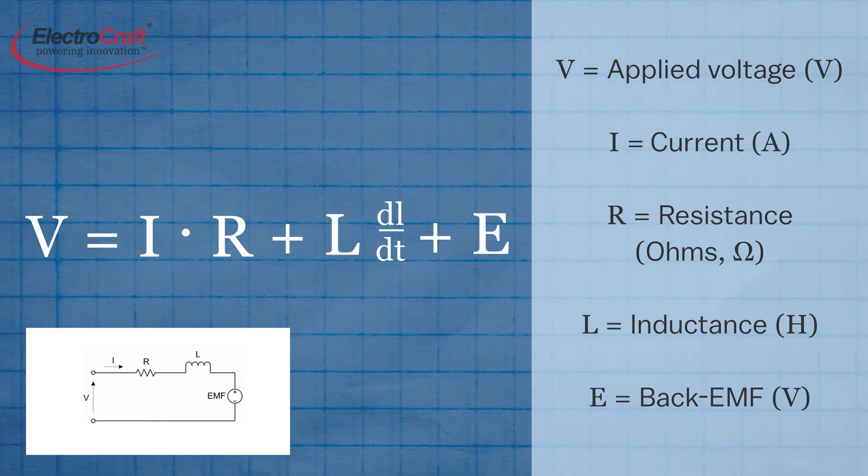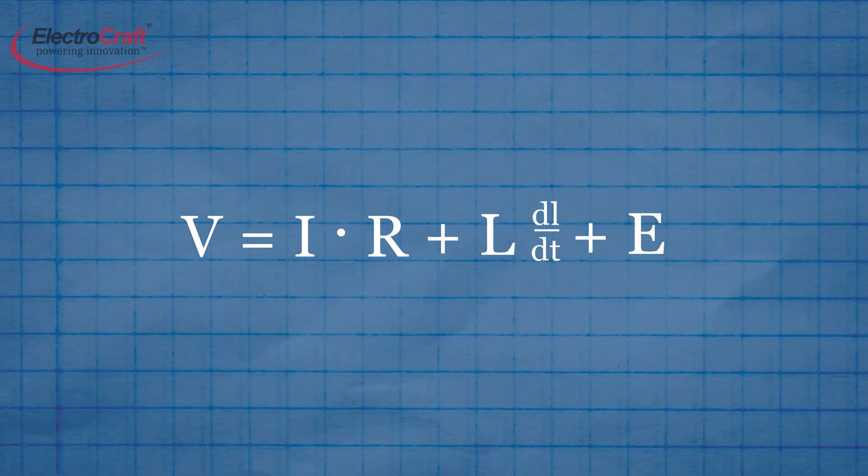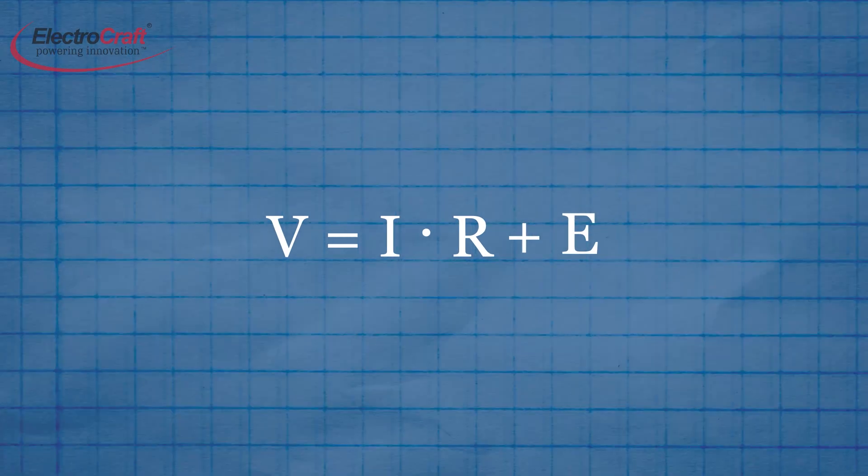We can assume that the current is constant, in which case inductance can be disregarded and the voltage equation can be rewritten as shown here.